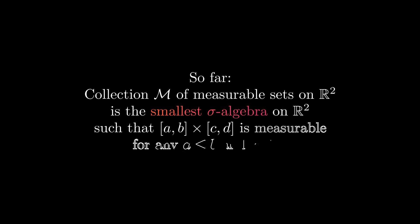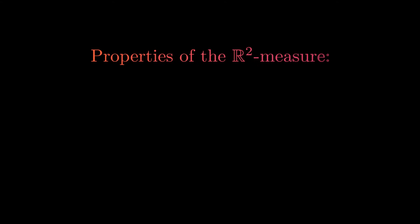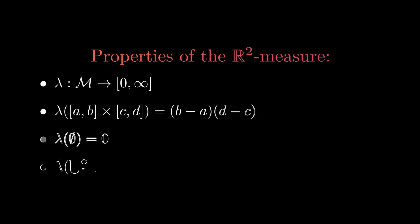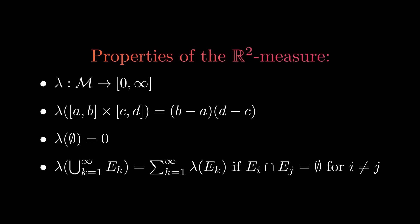Using this definition, we can say that the measurable sets are the smallest sigma algebra containing all rectangles. Now let's look at the properties of the function which assigns the area — called a measure. It is a function from the collection of measurable sets to the non-negative real numbers, including positive infinity. The measure of a rectangle is the product of its side lengths, the measure of the empty set is zero, and the countable union of pairwise disjoint sets has the sum of the measures of the parts.